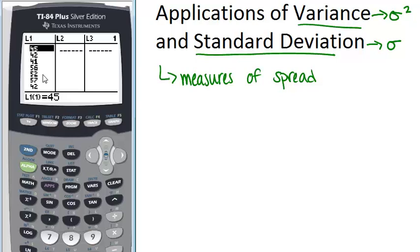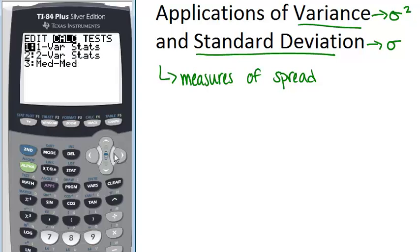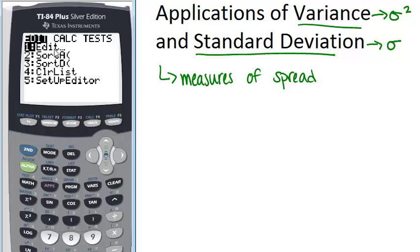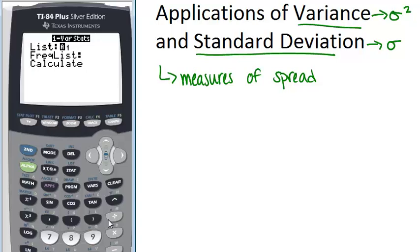Go back into STAT, but this time scroll over to CALC and make sure you have highlighted one-variable stats and click enter. It will ask what list you're using. We are doing list one, so we don't need to change that. Then calculate.